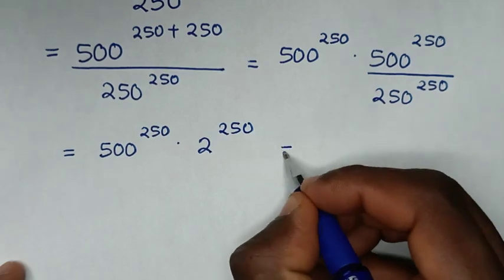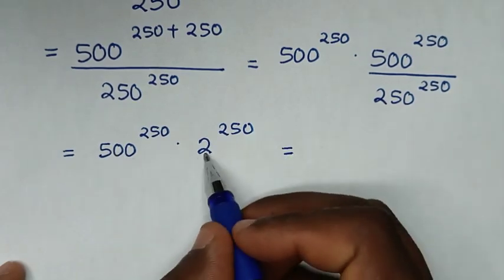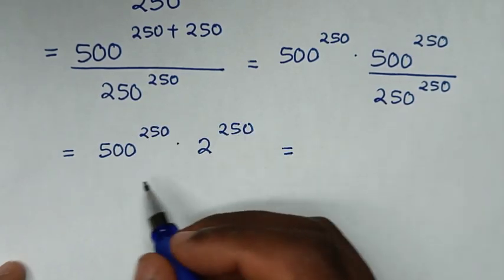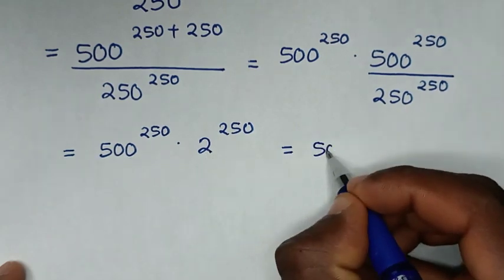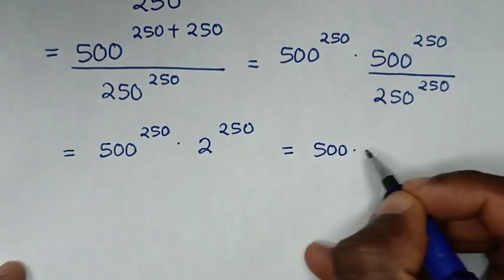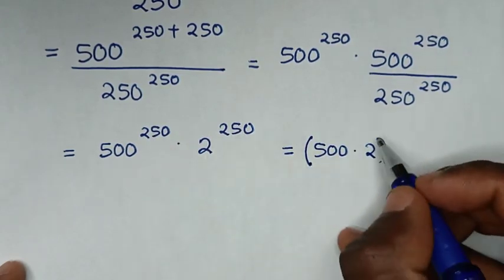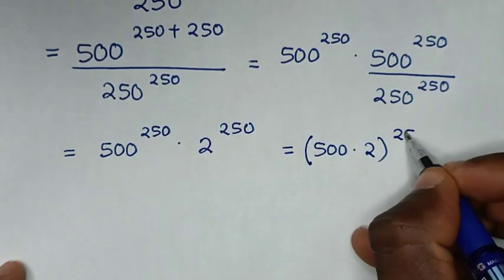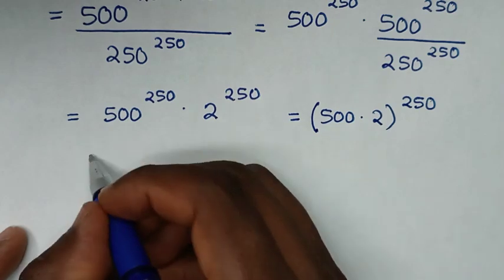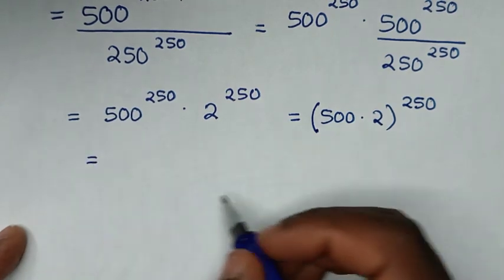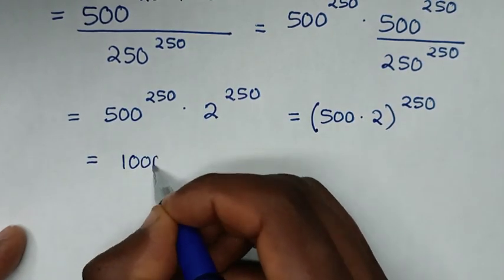Then it will be equal to — and here is multiplication of exponents with the same power. So it will be this times this, which is 500 times 2, then bracket, same power of 250. Then it will be equal to 1,000 power of 250.